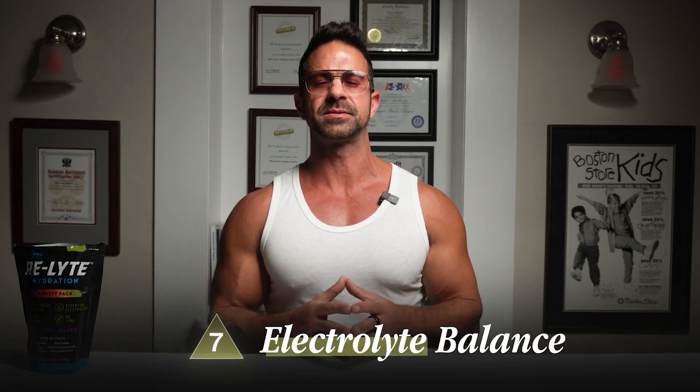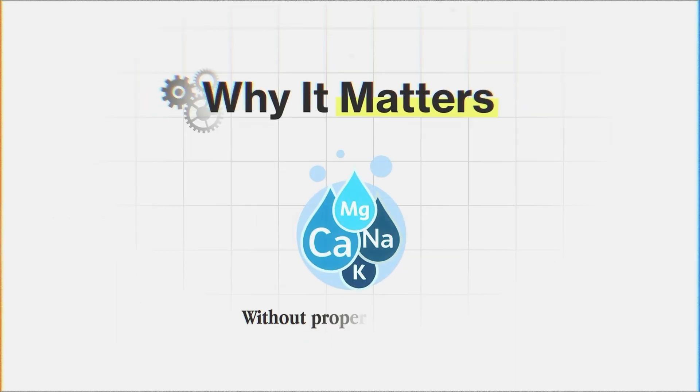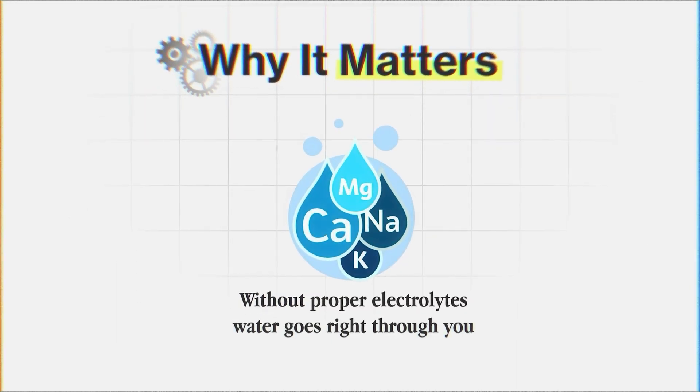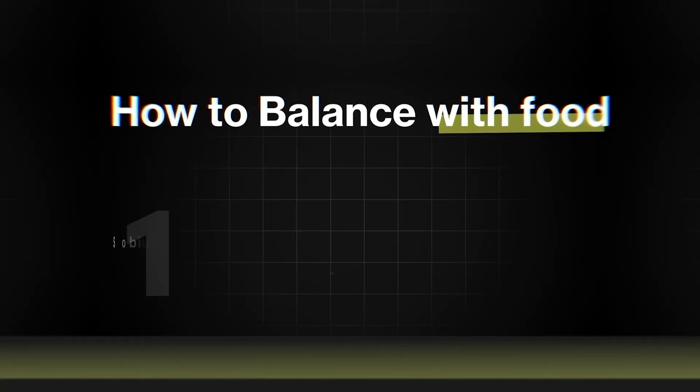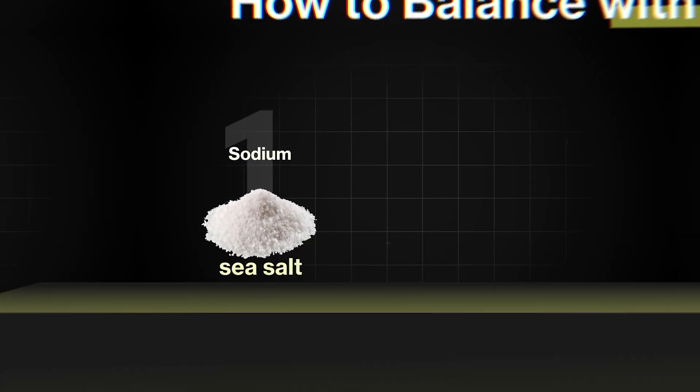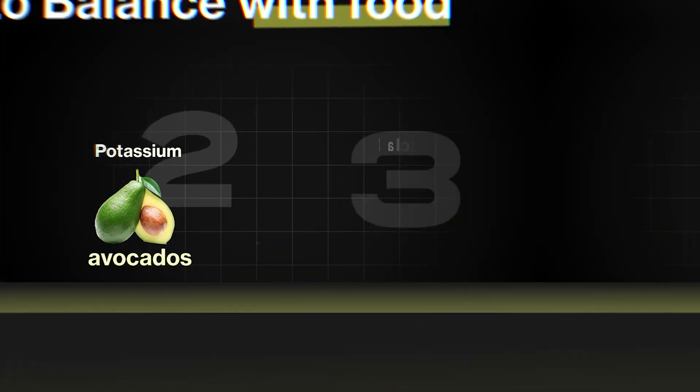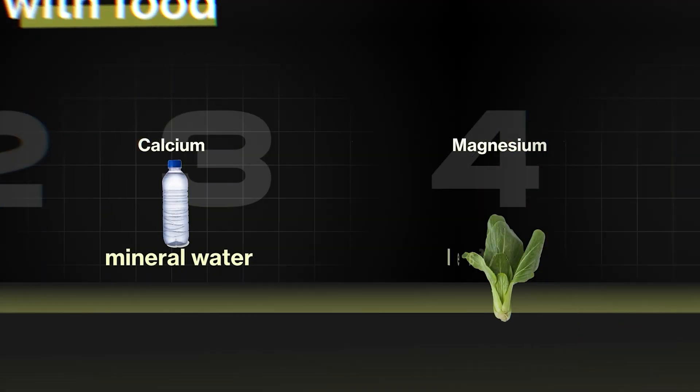Seven, electrolyte balance. Why does this matter? Without proper electrolytes, water goes right through you, making dehydration even worse. How to balance it with food? Sodium, sea salt. Potassium, avocados. Calcium, mineral water, and magnesium leafy greens.